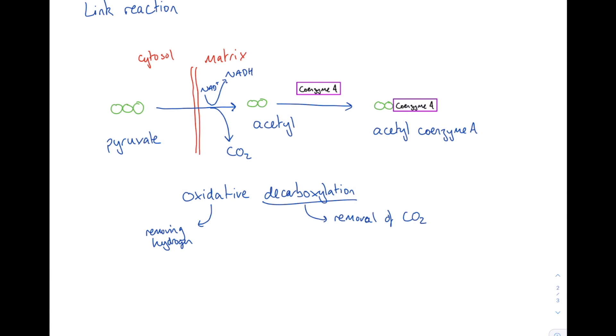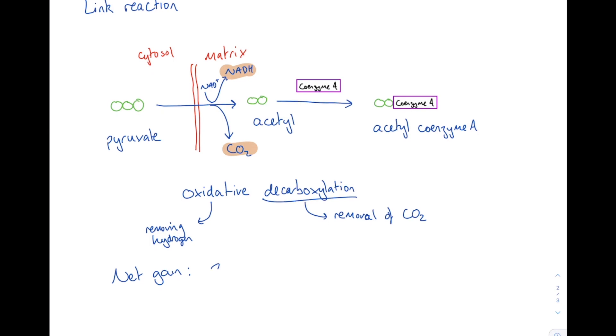Looking at our overall net gain of the link reaction, we create one NADH and one carbon dioxide per pyruvate molecule. But remember, each glucose molecule is broken down into two pyruvate molecules, so per glucose molecule our link reaction produces two NADH and two carbon dioxide molecules. This leaves us with two molecules of acetyl coenzyme A, a two-carbon compound attached to a coenzyme, and this all takes place in the matrix of the mitochondria — the same place where the Krebs cycle occurs.